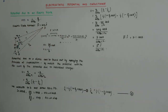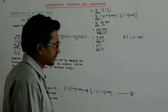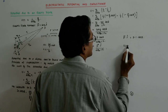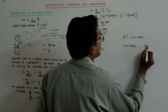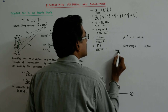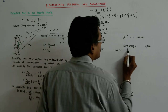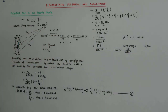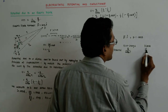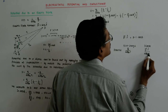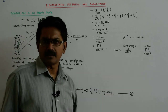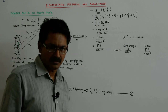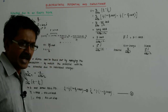For a point charge, the potential is Q upon 4 pi epsilon naught r. For a dipole, it is P dot r-hat upon 4 pi epsilon naught r squared. Just notice: where it was r for a point charge, it becomes r squared for the dipole. Here it is the dipole moment P which is causing the potential, and it falls off as 1 upon r squared.